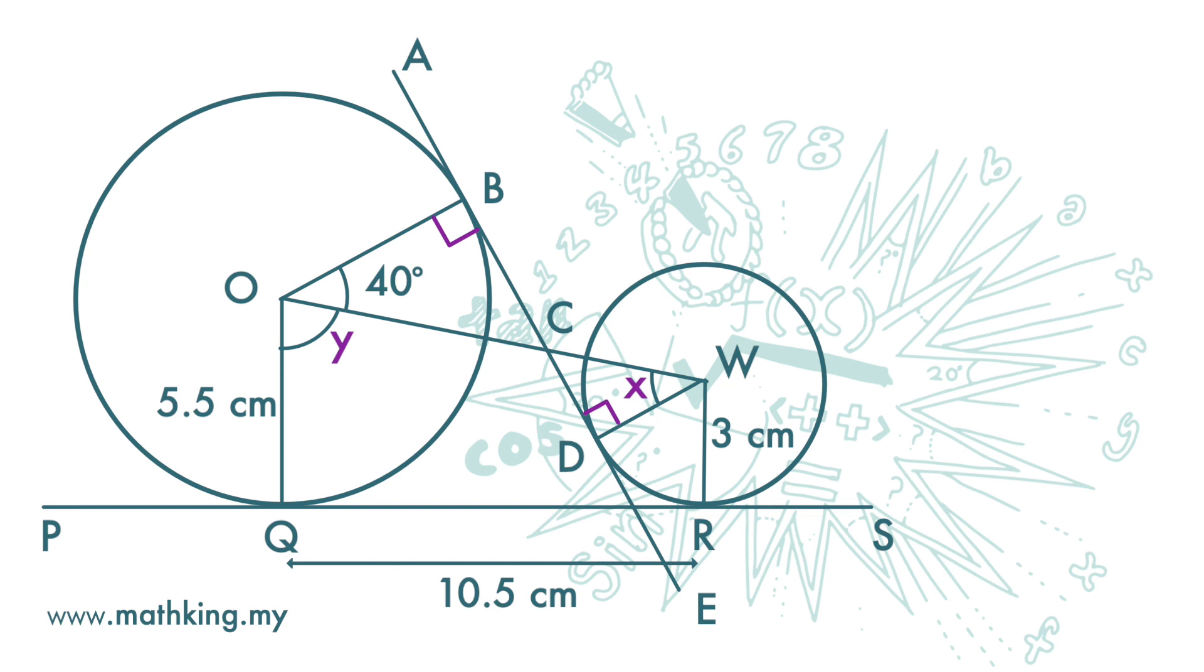Now, these angles at C, angle BCO and WCD are vertically opposite angles. They are equal. Now, let's look at these two triangles. We can see that angle 40 degrees and X are equal. So, X must be 40 degrees.